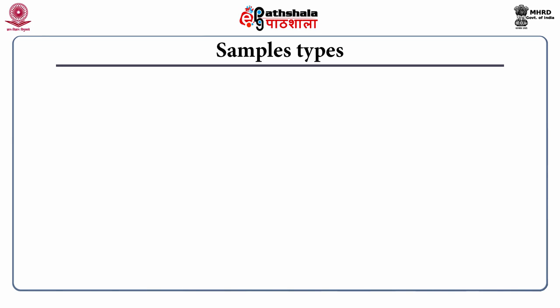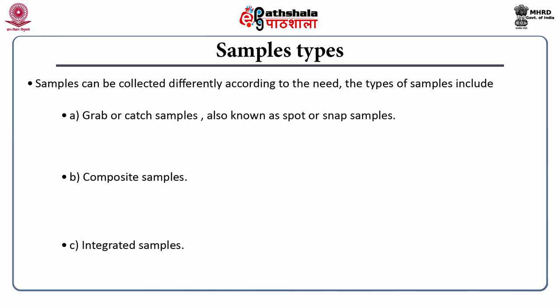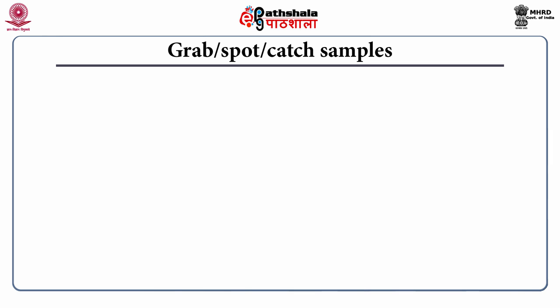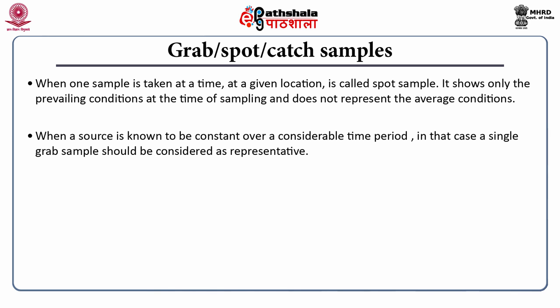The second consideration is sample types. Samples can be collected in three different ways: grab or catch samples, also known as spot or snap samples; composite samples; and integrated samples. A grab or spot sample is taken at one time at a given location. It shows only the prevailing conditions at the time of sampling and does not represent the average condition. When a source is known to be constant over a considerable time period, a single grab sample can be considered representative; otherwise, it cannot represent the sampling point.